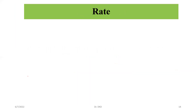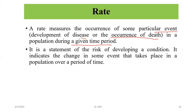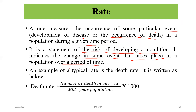A rate measures the occurrence of some particular event — development of disease or the occurrence of death — in a population during a given time period. Here, time period is an important point. Rate is a statement of the risk of developing a condition. It indicates the change in some event that takes place in a population over a period of time.